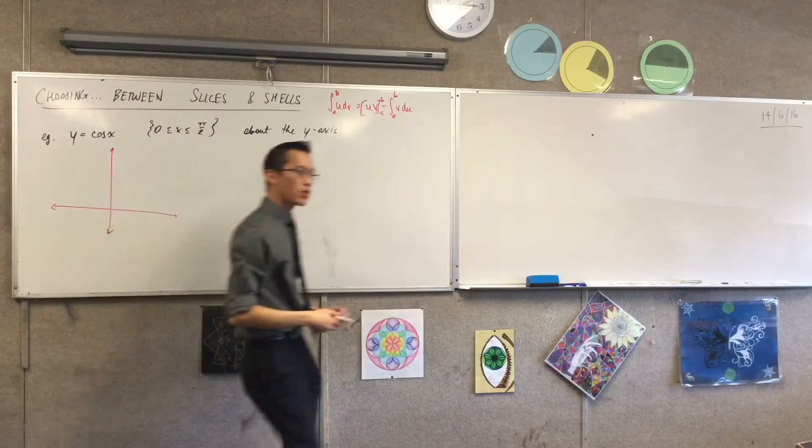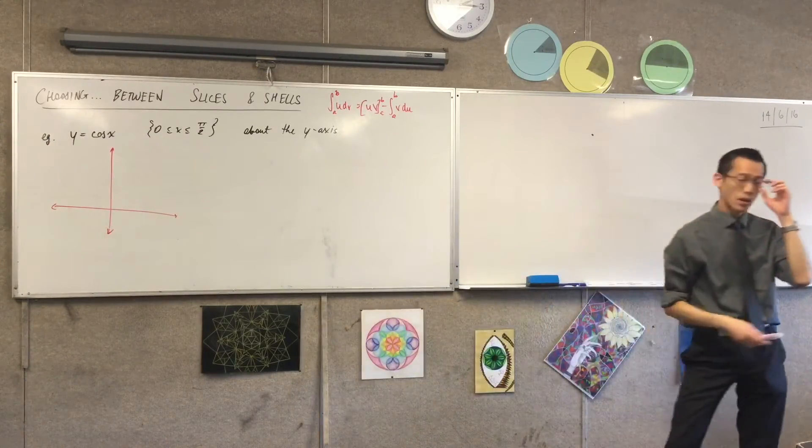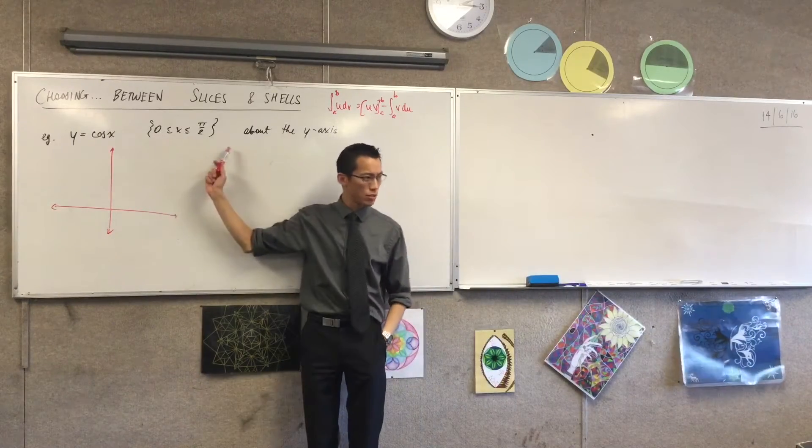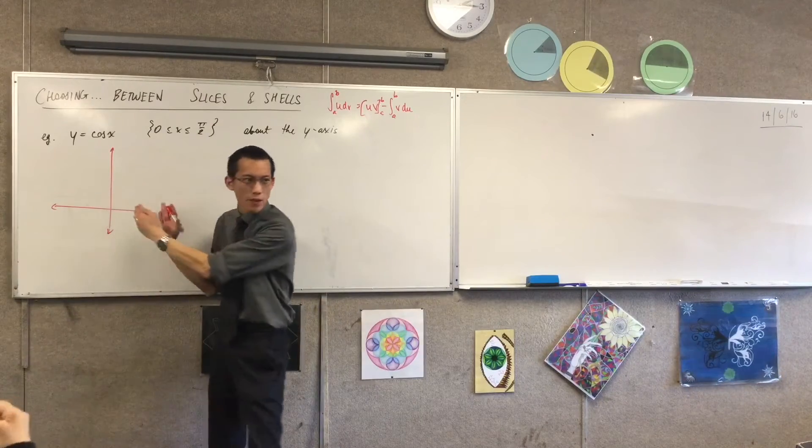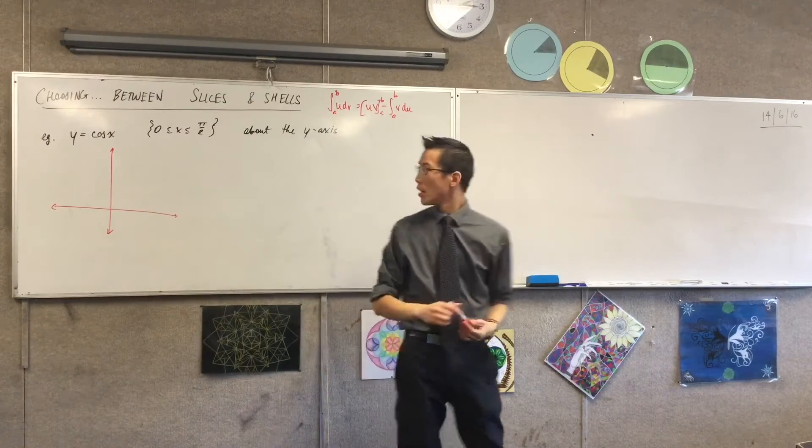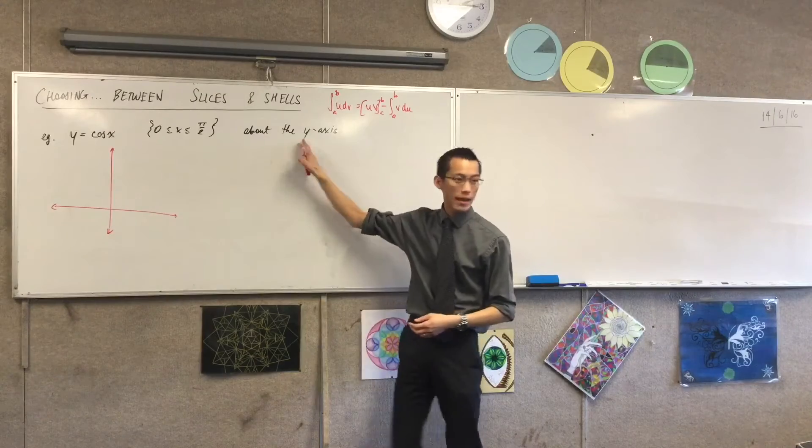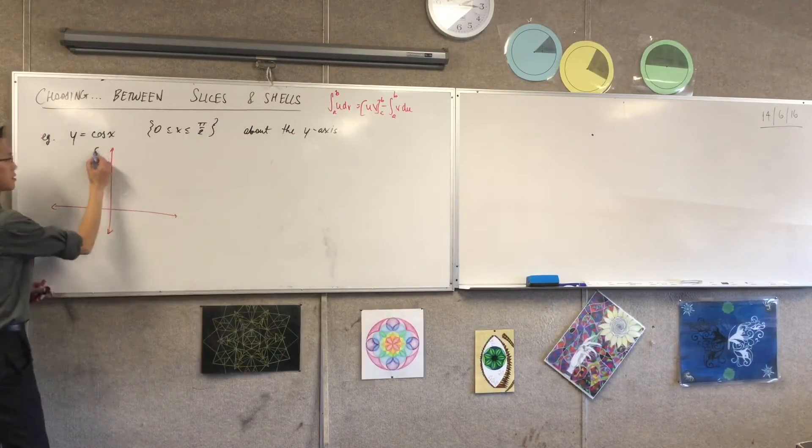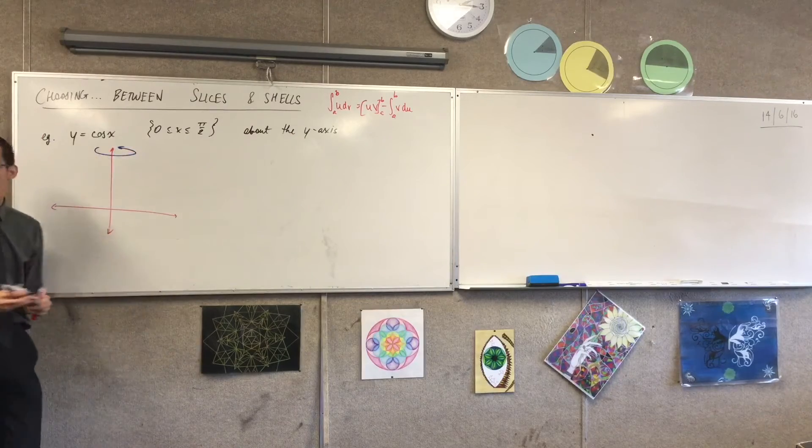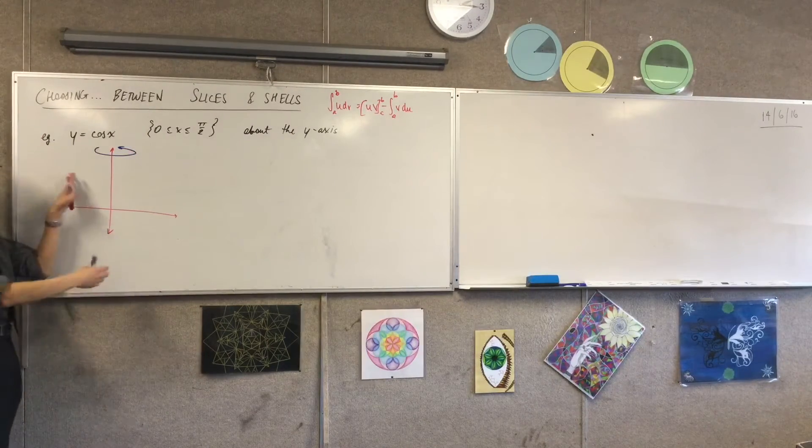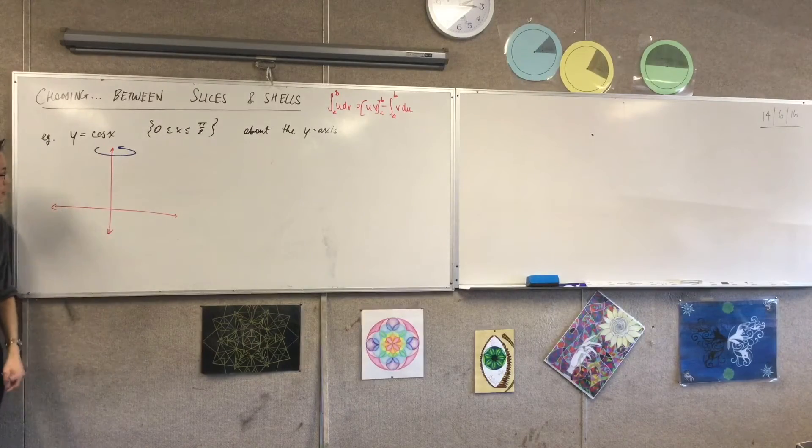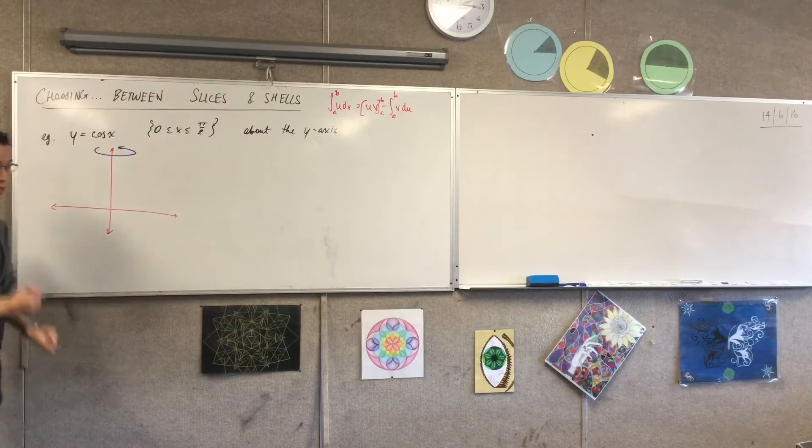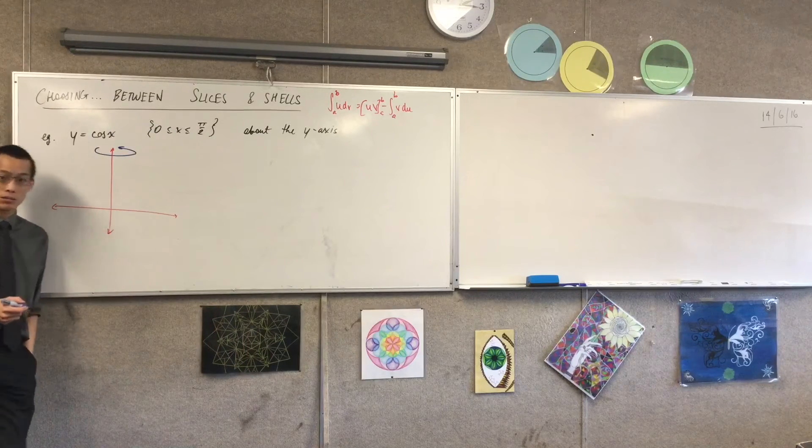All you need is your set of axes here. Now you'll notice I'm drawing this part of the axes because number one, I'm from naught to pi on two, so that gives me just a little bit of the y equals cos x curve, but I'm rotating around the y axis, that's this way, right? So therefore I'm going to get something symmetrical about this axis.